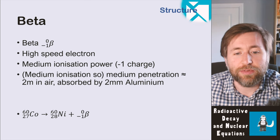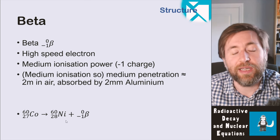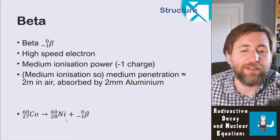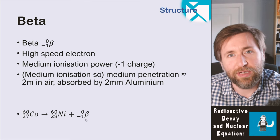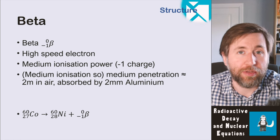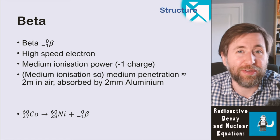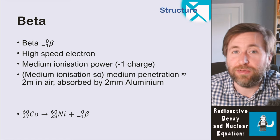People often make the mistake of second-guessing themselves, going for 27 equals 26 minus one — but that's wrong. Whenever you're given one of these equations, just make sure the top line balances and the bottom line balances. Treat them separately and confirm each side adds up correctly.